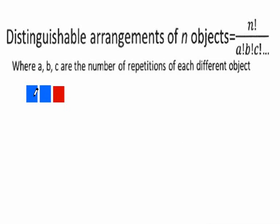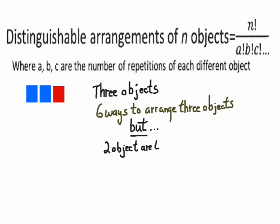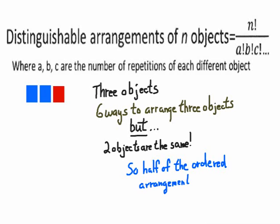Here's a blue, blue, and a red object. There are three objects, and notice that there are six ways to arrange three objects — three times two times one ways. However, two of them look exactly the same. You wouldn't be able to tell them apart if you juggled them around. Two of the objects are identical, so half of the arrangements are going to look the same.